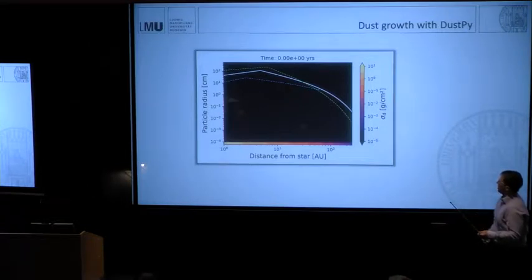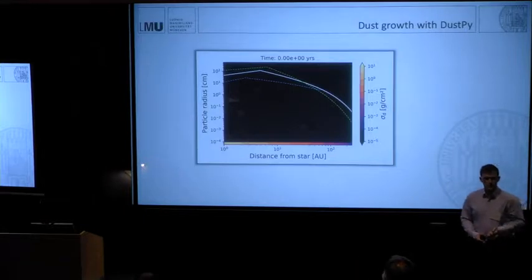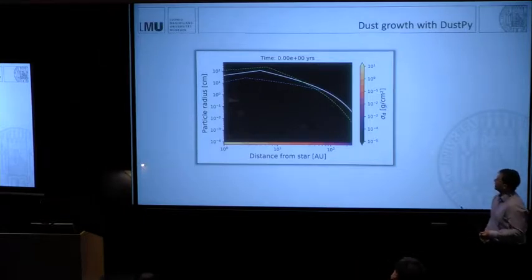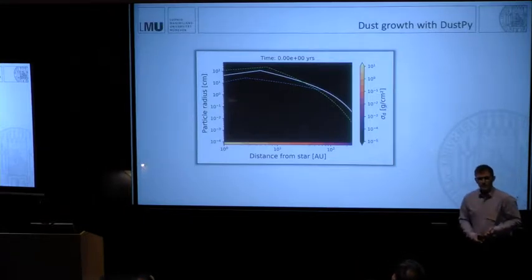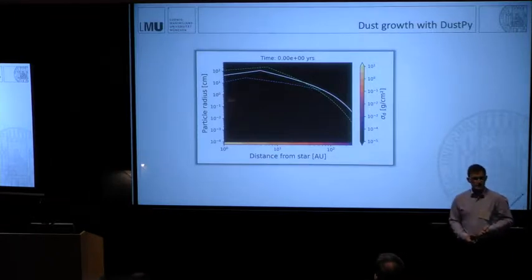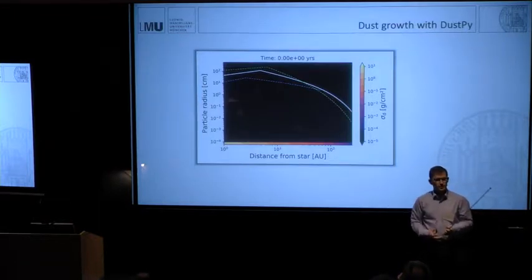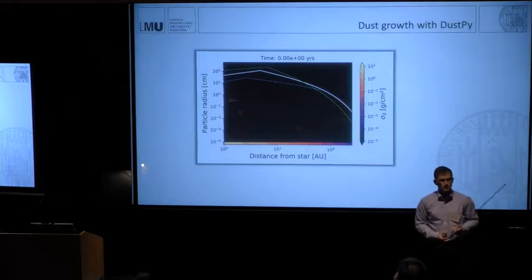There are also several other lines in this plot. The white line corresponds to particles of Stokes number one. The blue dashed line is the fragmentation limit. When particles reach that blue line, they will fragment. The green line is the drift limit. When particles at the green line drift faster inwards than they can grow, the speed in the left direction is larger than the speed in the upwards direction.